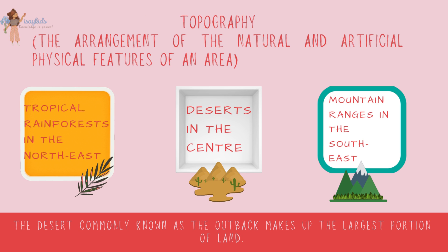Topography is the arrangement of the natural and artificial physical features of an area. Australia has tropical rainforests in the northeast, deserts in the center, and mountain ranges in the southeast. The desert, commonly known as the outback, makes up the largest portion of land.